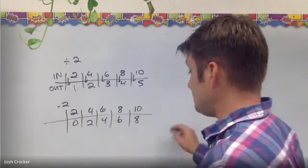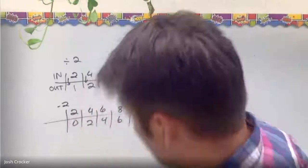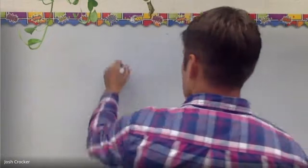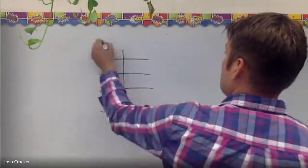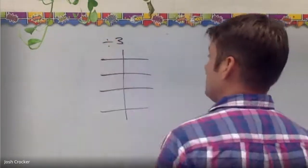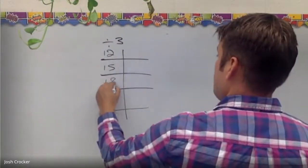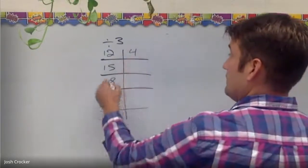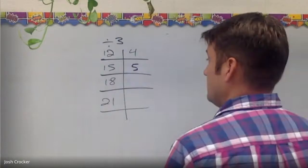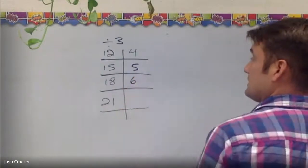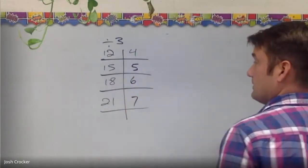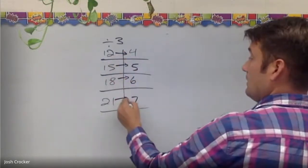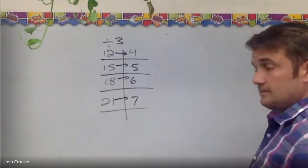So let's look at another division machine. My rule is divide by 3. 12 divided by 3 would be 4. 15 divided by 3 would be 5. 18 divided by 3 is 6. 21 divided by 3 is 7. So division makes numbers smaller. 21 became 7. That's smaller.